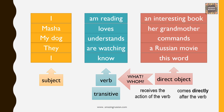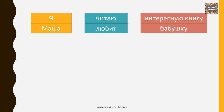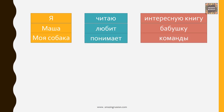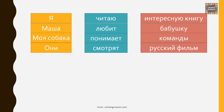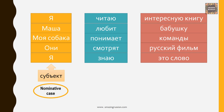Now I have the same sentences in Russian: Я читаю интересную книгу. Маша любит бабушку. Моя собака понимает команды. Они смотрят русский фильм. Я знаю это слово. The subject — Я, Маша, моя собака, они, я — is always in the nominative case, именительный падеж. Читаю, любит, понимает, смотрят, знаю — это предикат.